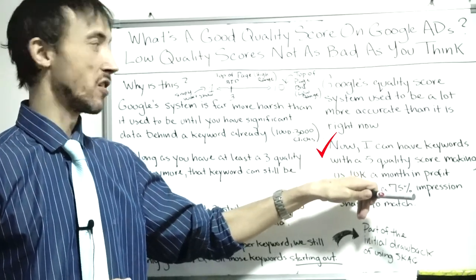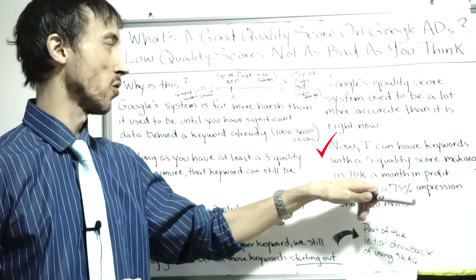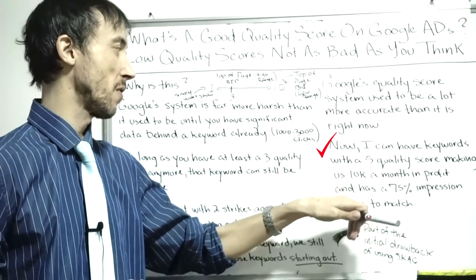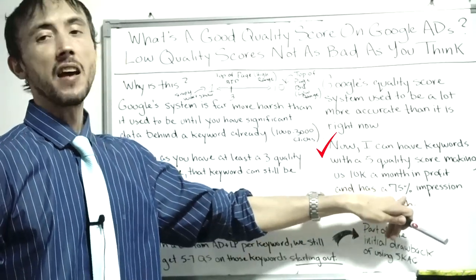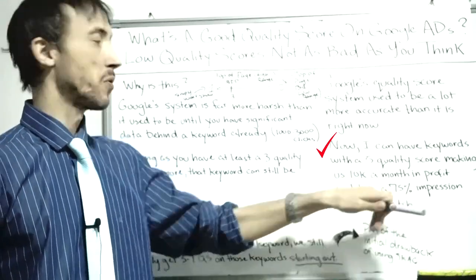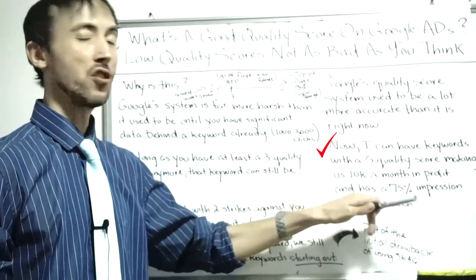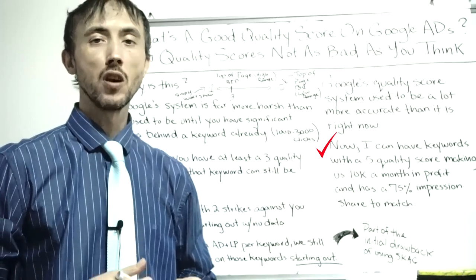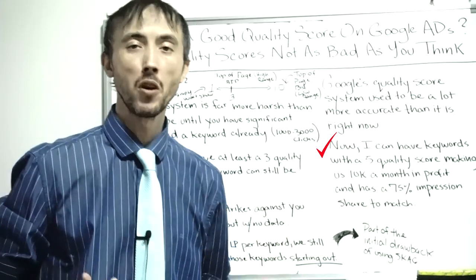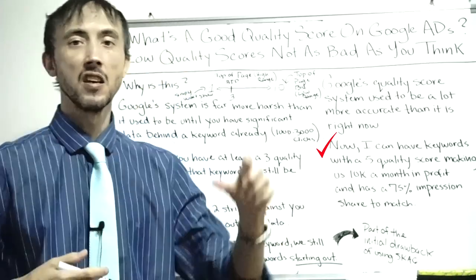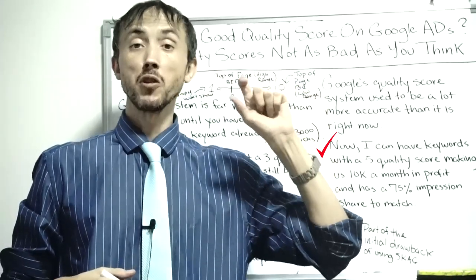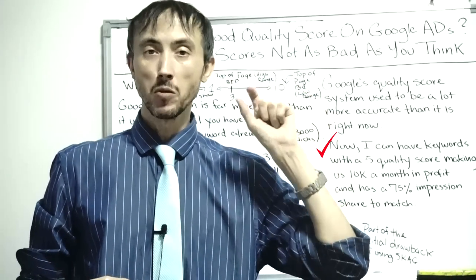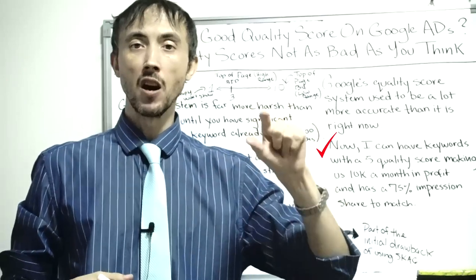Your average quality score starting out is more like a five now versus a seven. A five quality score used to mean you were doing a pretty bad job. But what I can tell you is we have lots of keywords we're running for clients with a five quality score where we're banking off those keywords — still making ten thousand dollars a month or more in profit from a single keyword that gets searched a lot and has 75% impression share.